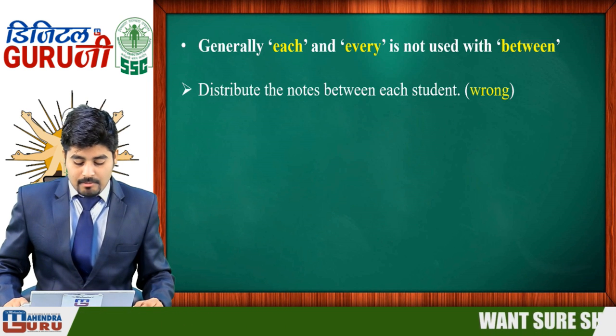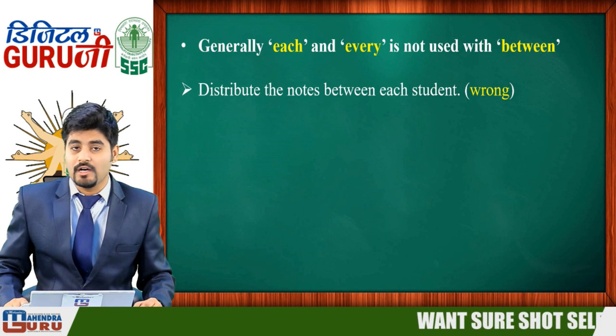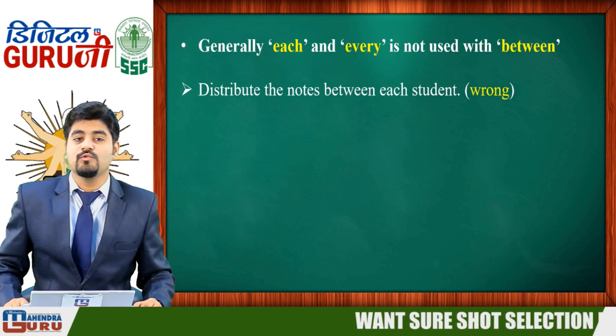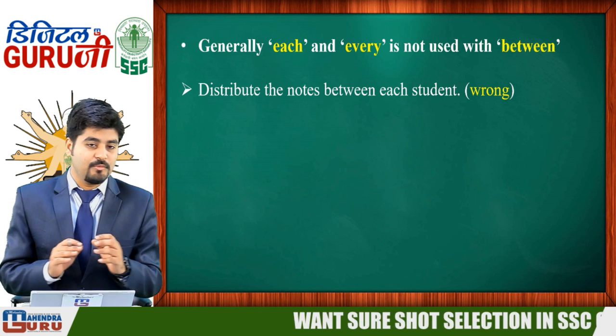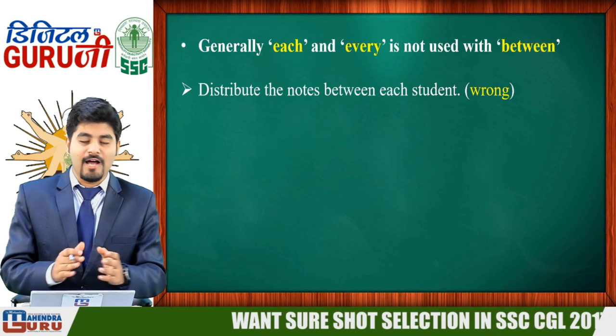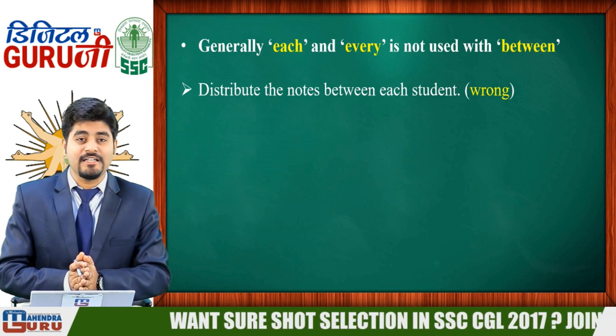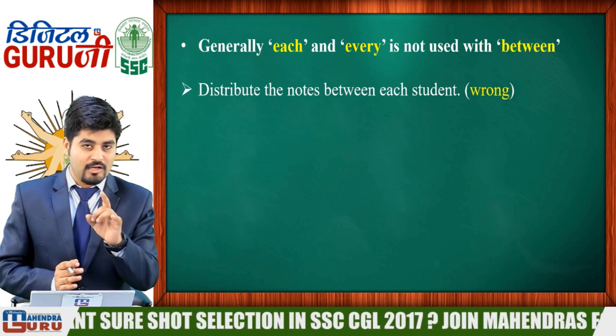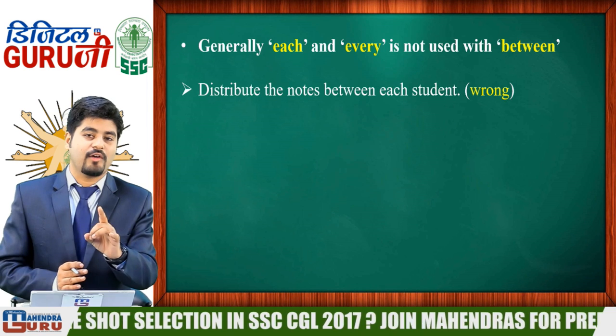A special rule: 'between' is not used with 'each' and 'every' in the simple form. For example, 'Distribute the notes between each student' is incorrect, because 'each student' refers to one student at a time.